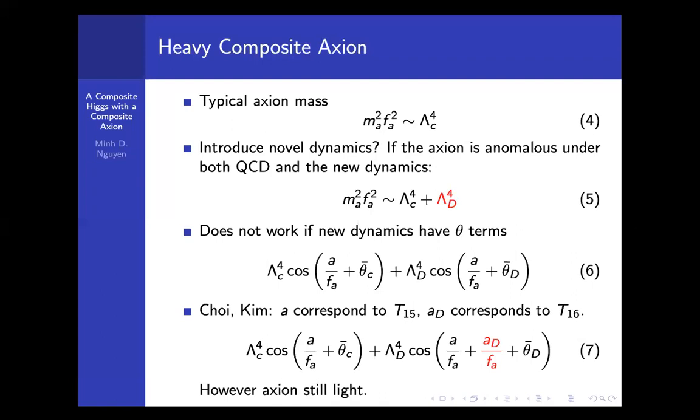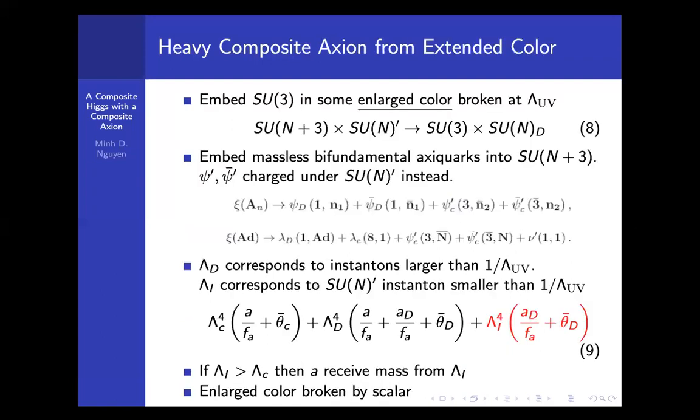To get around this and still get a heavy axion, one way that we pursue is by embedding the color SU(3)c and the axi-color into some enlarged color broken at some scale Λ_UV. In this case, the SU(3) comes directly from the SU(N+3) and the SU(N) and SU(N)' kind of form a diagonal group SU(N)d.